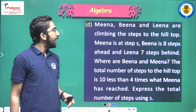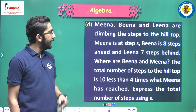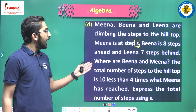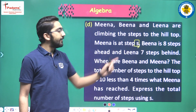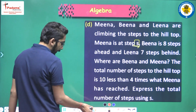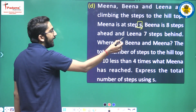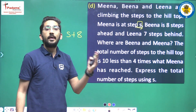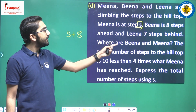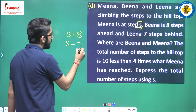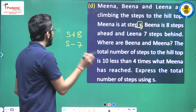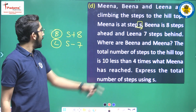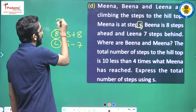Mina, Bina, and Lina are climbing the steps to the hilltop. Mina is at step S. Bina is eight steps ahead, so Bina is at S plus eight. Lina is seven steps behind, so Lina is at S minus seven. Mina is at step S, Bina is at S plus eight, and Lina is at S minus seven.